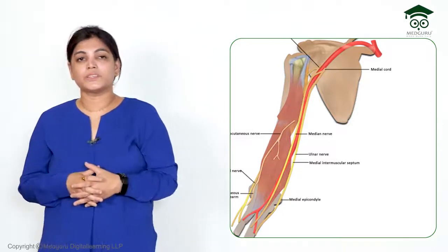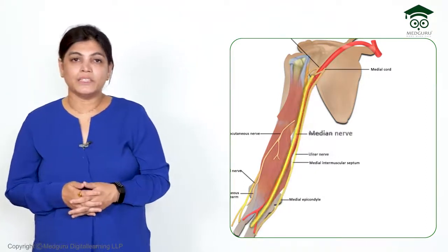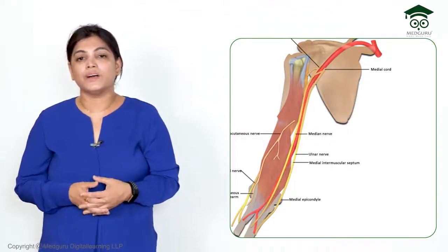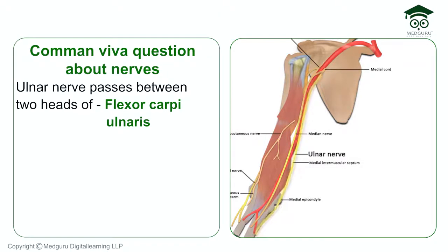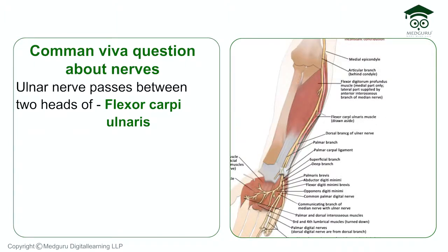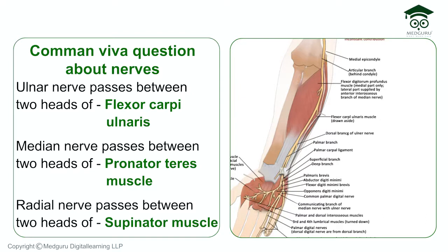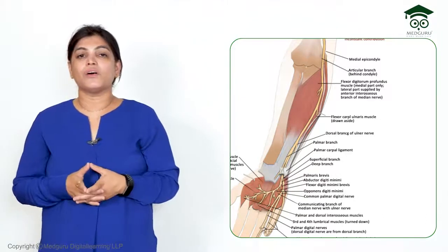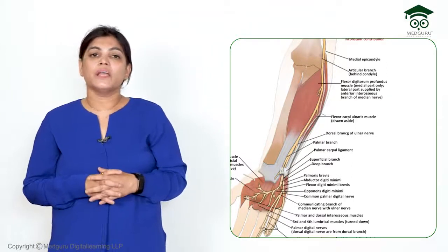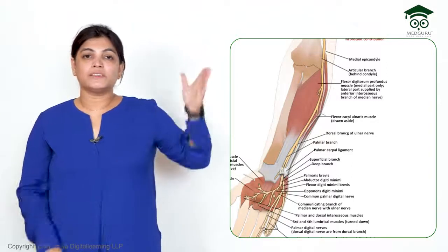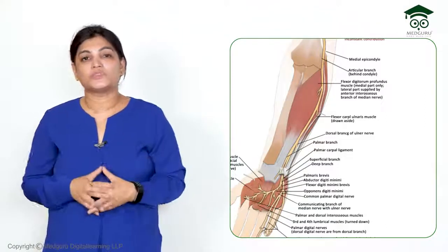To conclude, the three major nerves of the upper limb often asked in examinations are the radial nerve, ulnar nerve, and median nerve. A common viva question concerns which gap or muscle heads each nerve passes through: the ulnar nerve passes between two heads of flexor carpi ulnaris; the median nerve passes between two heads of pronator teres; the radial nerve passes between two parts of the supinator muscle. You should be able to explain the course, branches, applied anatomy, and cutaneous distribution of these nerves.